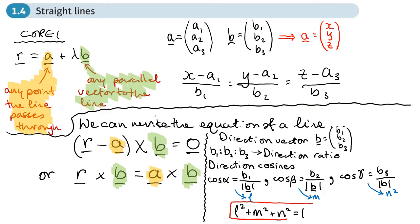To recap: if we take the direction vector, we can write each number as a direction ratio. The direction cosine is the x part of the direction vector divided by its length, the y part divided by its length, and the z part divided by its length. If we call each one L, M, and N, then L squared plus M squared plus N squared is always equal to 1.